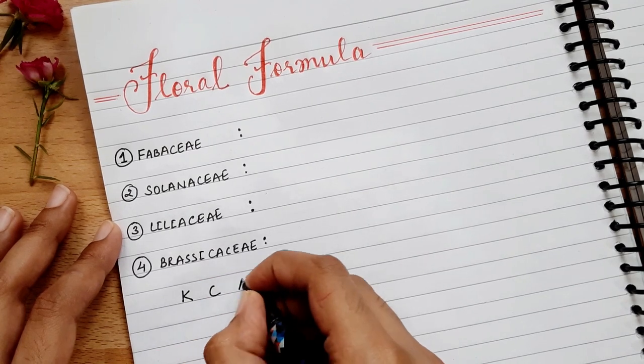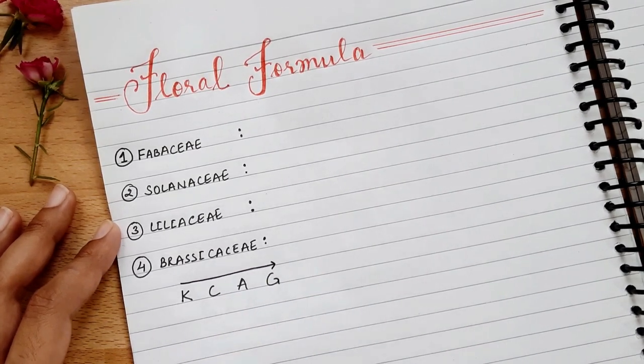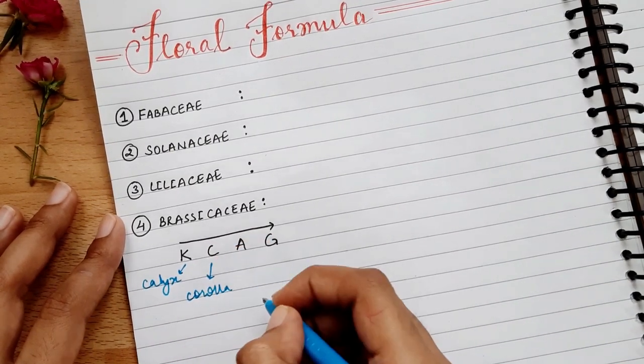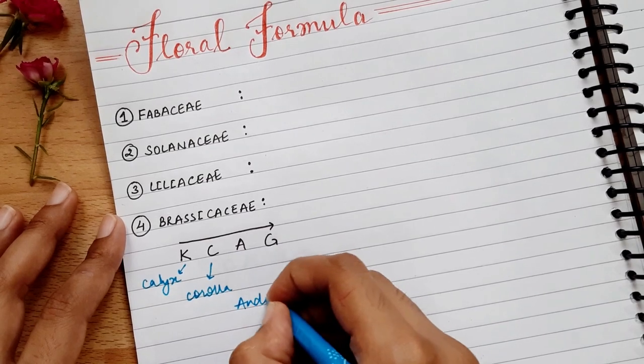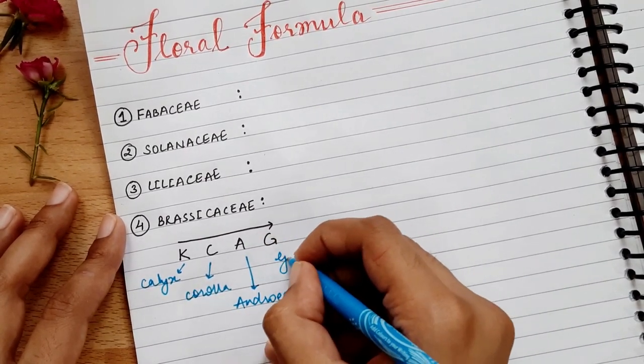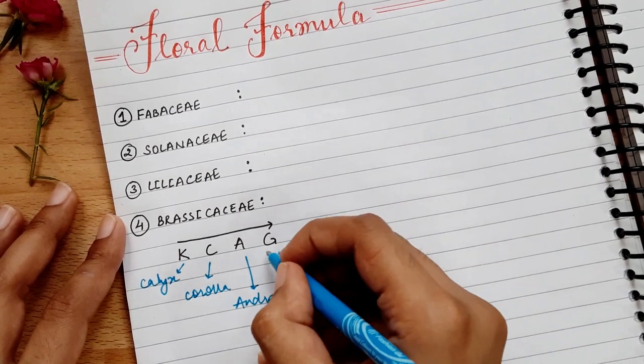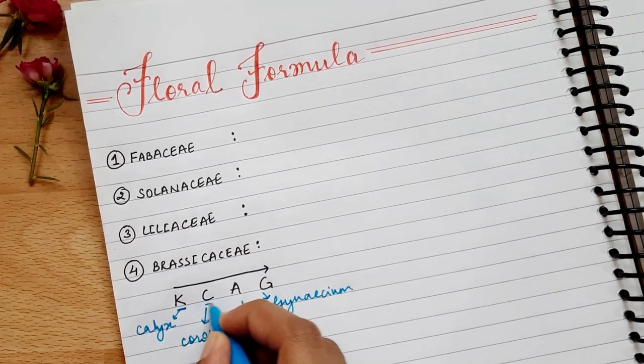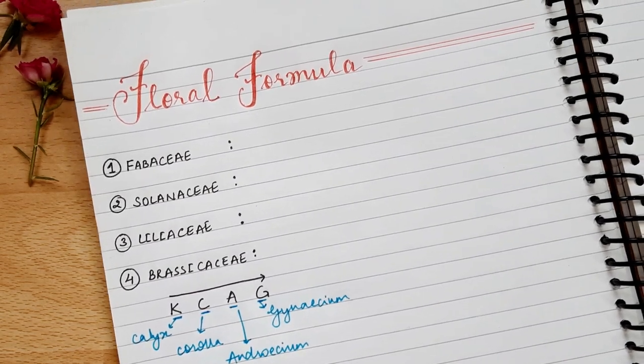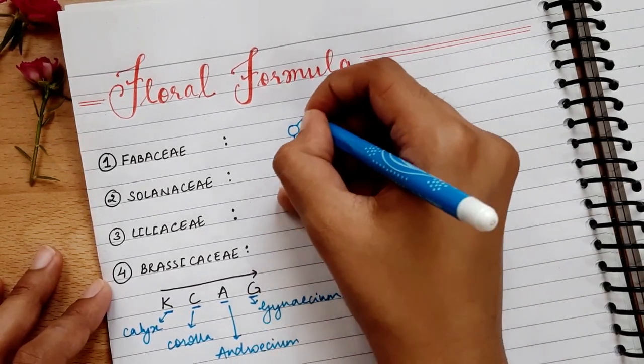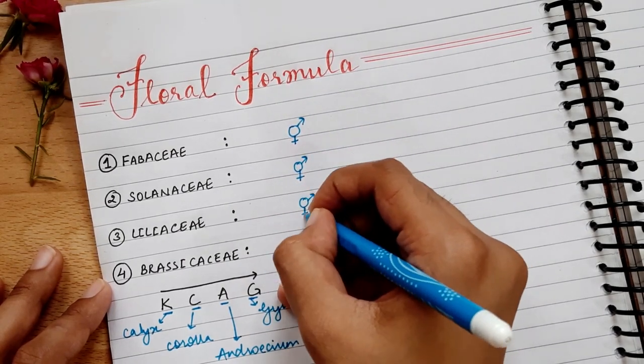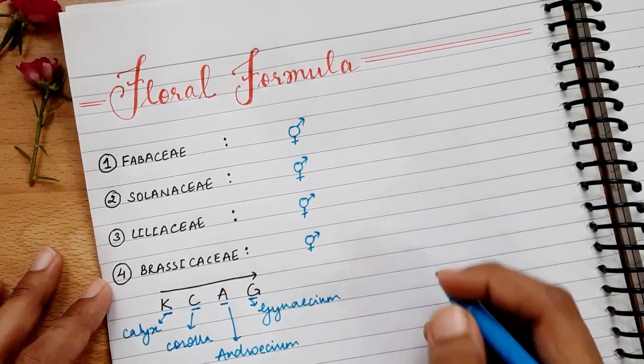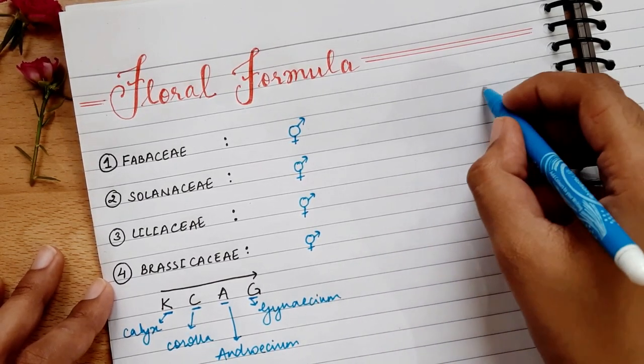Now, in this floral formula, K C A G is mentioned, which adds an outer and inner. K is for Calyx, C is for Corolla, A is for Androecium, and G is for Gynoecium. So K, C, A, and G - these four things we mention in the formula. Now, these four families are bisexual, which means that they will both present. So I am very safe, I can mention G and A.